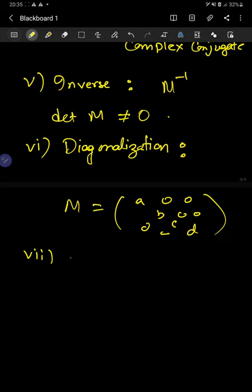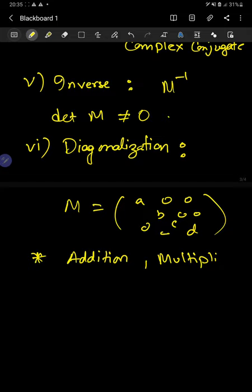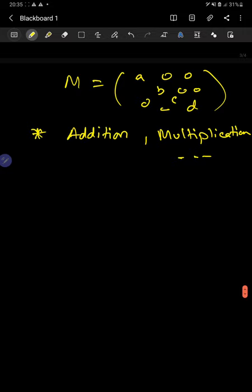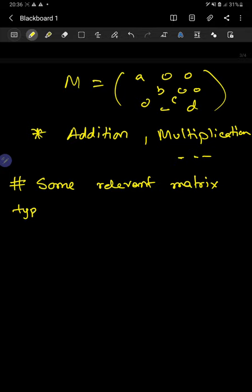We also have simple operations such as addition, multiplication, and so on. So we have covered most of the basic matrix operations. Let's now look at some relevant matrix types.